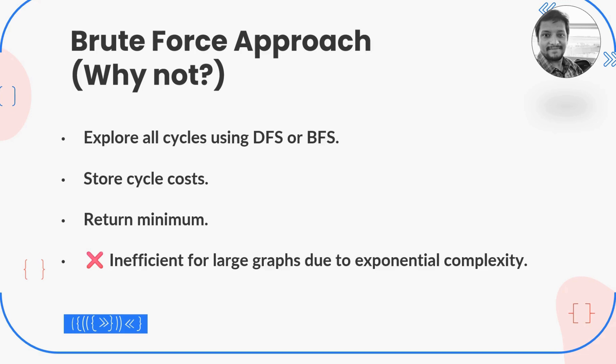I hope the problem is clear. Let's see the brute force approach. One brute force approach is to identify all cycles in the graph using BFS or DFS traversal, compute the cost of every cycle, and return the minimum. This will work, but it is an expensive and inefficient solution because we would be detecting each and every cycle in the graph. So I'm not going to discuss this further.